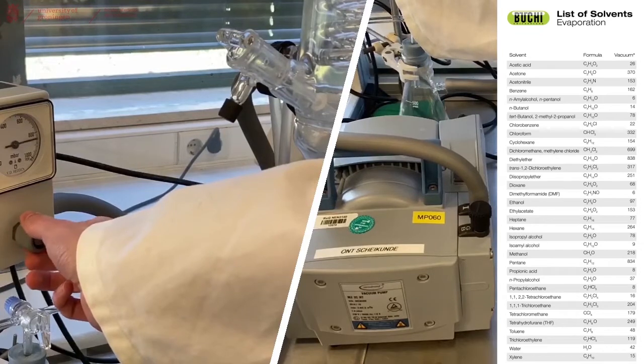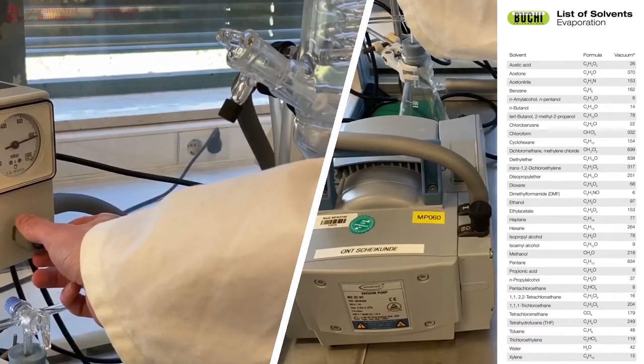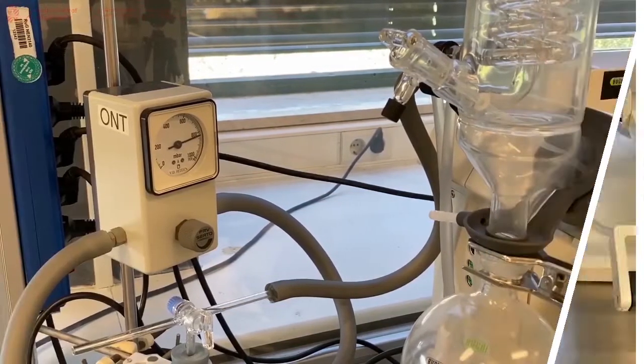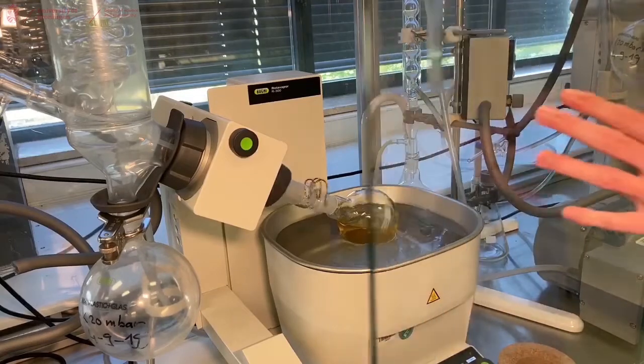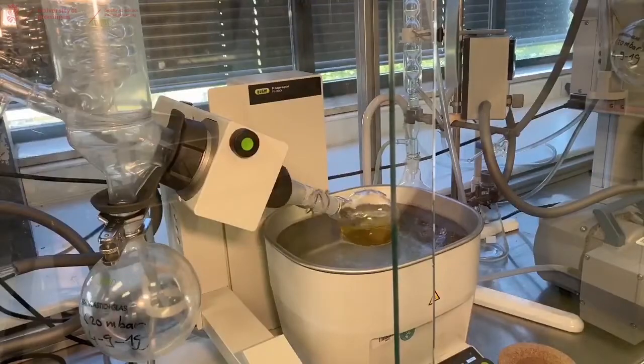Every Rotary Evaporator is equipped with a list of solvents and the required pressure. In this case, 800 millibars. We close the glass in front of the Rotary Evaporator. And wait until our solvent starts evaporating.